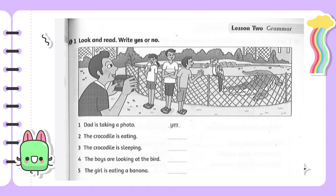Number three: 'The crocodile is sleeping.' — is the crocodile sleeping? Yes, it is sleeping, so write 'yes'. Number four: 'The boys are looking at the birds.' — yes, that's correct, write 'yes'. Number five: 'The girl is eating a banana.' — no, she is eating ice cream, so write 'no'.